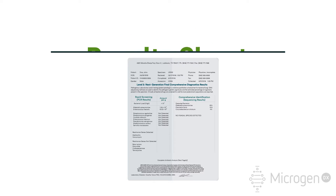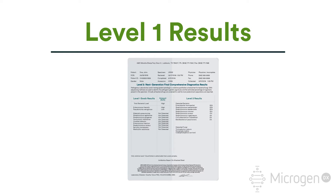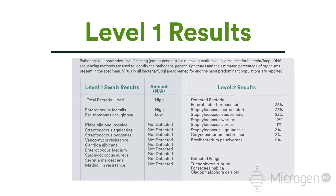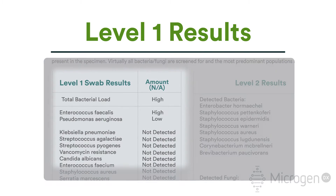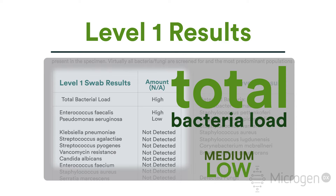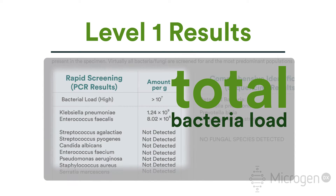Level 1 results are a quantitative PCR panel. If you have submitted a swab sample, the PCR panel tells you the total bacteria load on a low, medium, or high scale. If you have submitted tissue or fluid, the PCR panel will state the numerical value of the bacteria, such as 10 to the 5th.